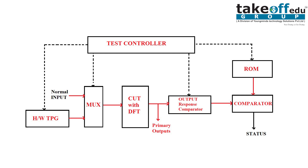Through the input mux, each test pattern is given to the CUT. If BIST is in testing mode, these inputs will be given; otherwise, the normal input is given. The output mux collects all the outputs, and these outputs are given to the compactor. For time compaction, we can use MISR — Multiple Input Signature Register. For space compaction, we reduce the data width. The output collected here is then compared with the expected outputs stored in the ROM, which are the signatures. These signature outputs are compared and a status is produced.